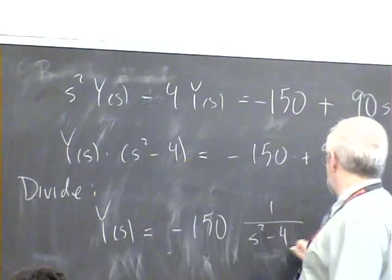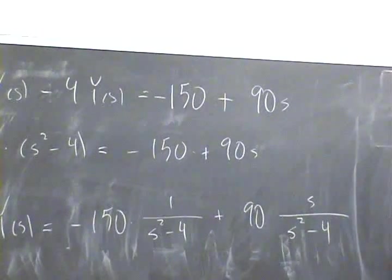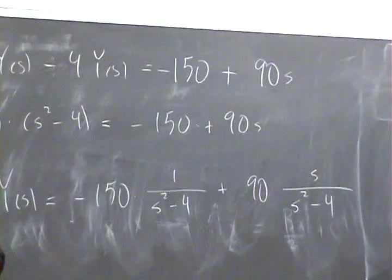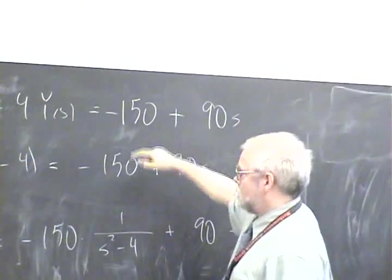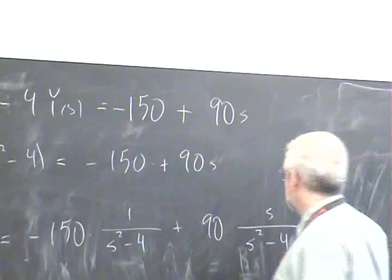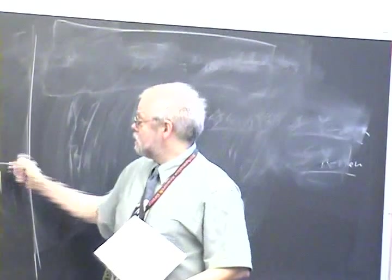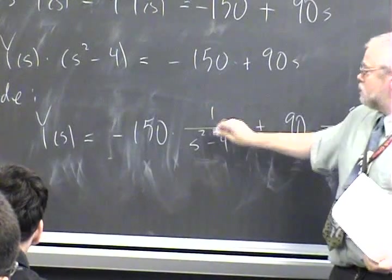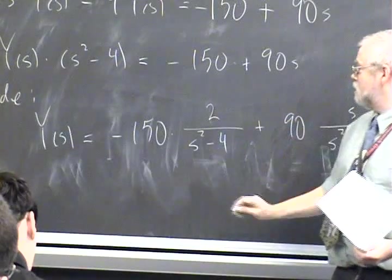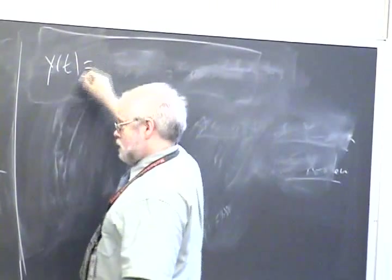And now to solve for Y, we have to put all the Y's on one side and all the other stuff on the other side. So we're going to have -s²·Y(s) + 4·Y(s) = 90s - 150. Y(s) times (4 - s²) = 90s - 150.